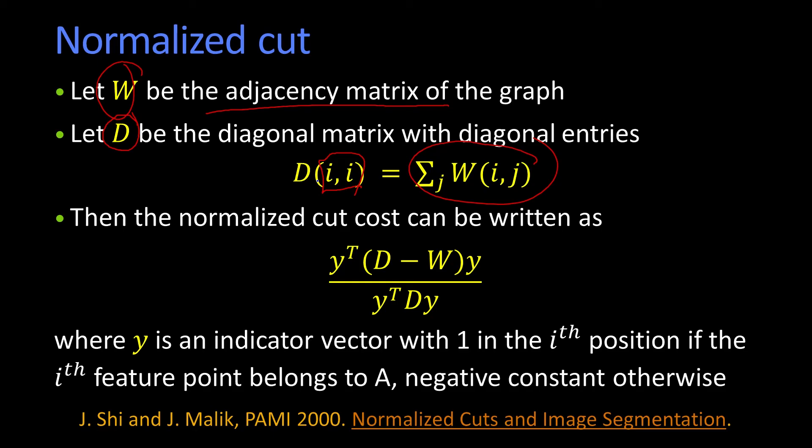And then what you can show is that the normalized cut cost can be written using this simple expression, where this vector y is what's referred to as an indicator vector. So it's a vector that's got positive ones and negative ones, as to whether—remember, cutting this into two parts A and B. So it's a positive one if that point belongs to segment A, and it's a negative constant otherwise. So to solve even that for y is very difficult,